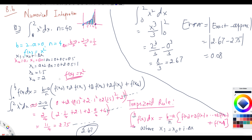The next thing we will do is look at a different method called Simpson's rule, and we will also talk about finding the error and how many terms are needed to make the error very small. Simpson's rule uses a quadratic function to approximate the area under each strip, which gives a better approximation.